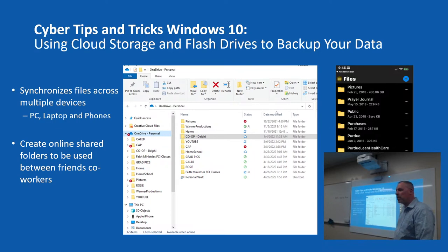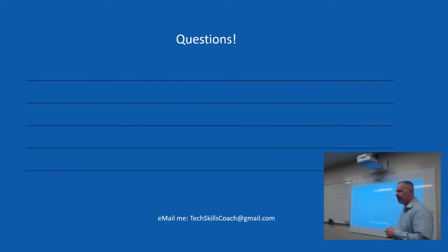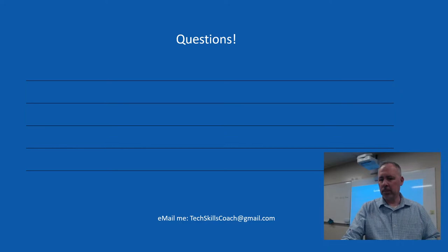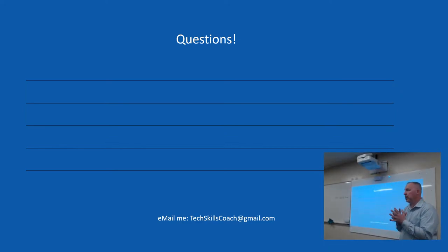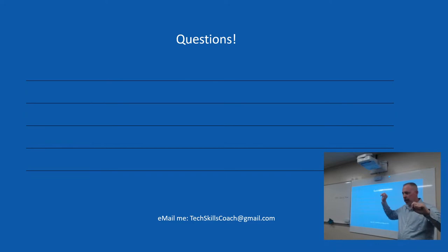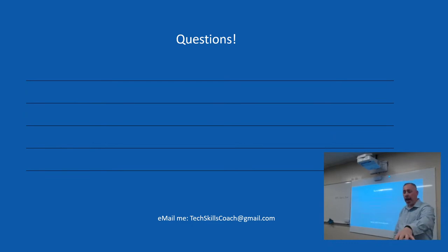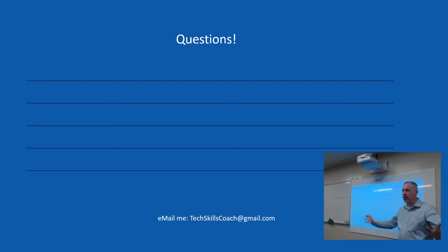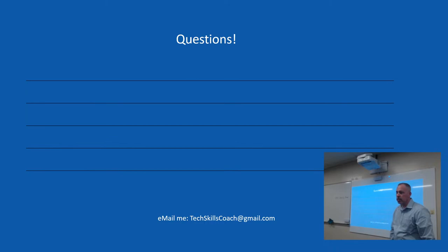OneDrive is device agnostic — it doesn't care if you have a Mac, PC, iPhone, or Android. It knows how to get files to the right locations. The app for your phone will look different than the app for PC, but it's still the same file structure coming down to different devices. That's good to know since many of us are using Apple products.